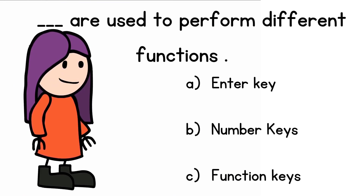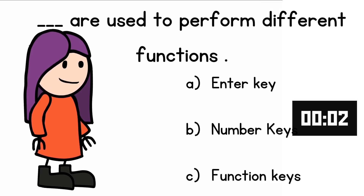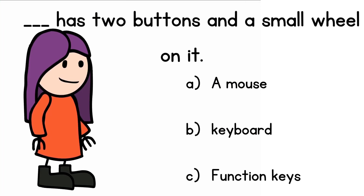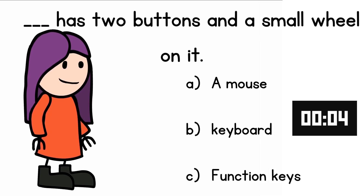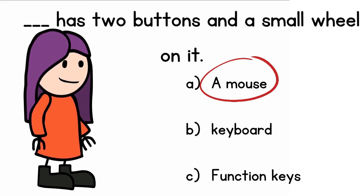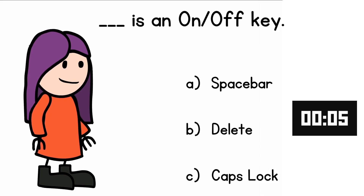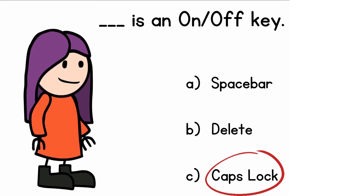Function keys are used to perform different functions. The answer is function keys. The mouse has two buttons and a small wheel on it. The answer is a mouse. The caps lock is an on-off key.